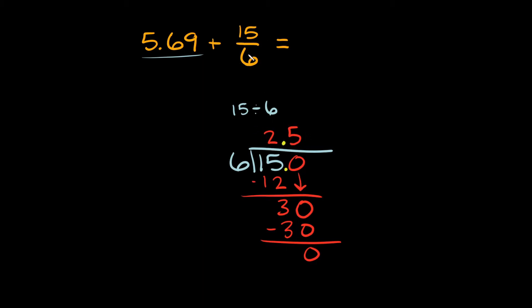So, 15 over 6 as a decimal would be 2.5. So, I'm going to take out this 15 over 6, and I'm going to replace it with 2.5. So, now this problem is a little easier to work with, right? Because now they're both in decimal form. So, now we just have to add up these two decimals together.